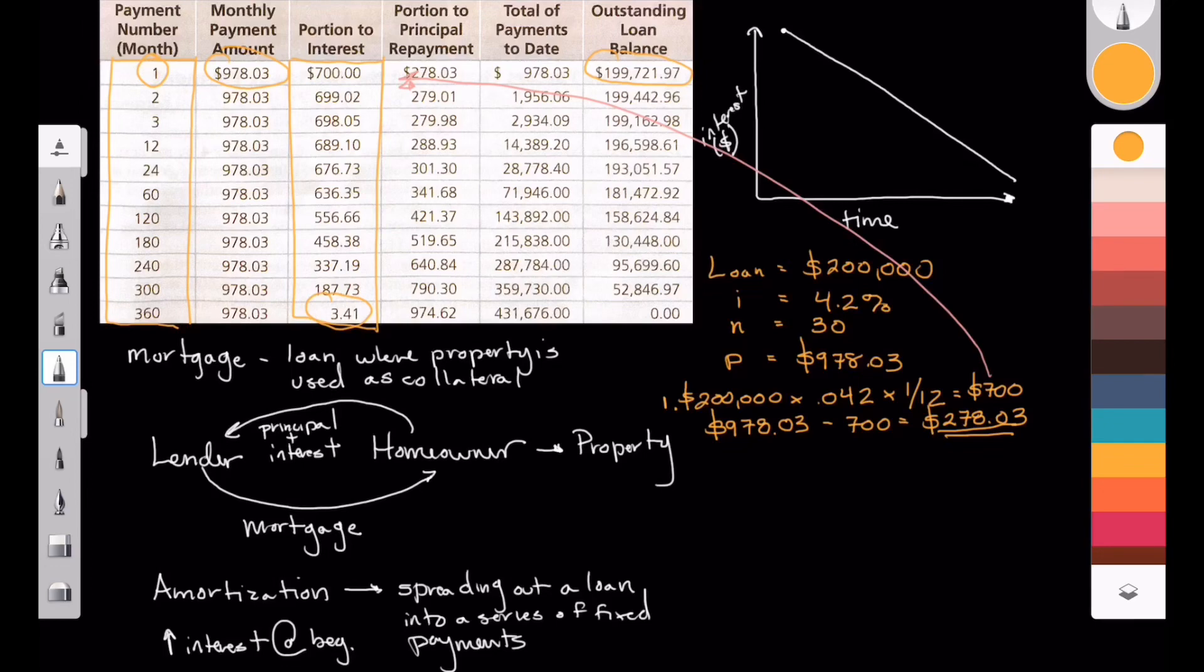And that's what we calculate the next one on. So if this was the second month, our loan is now $199,721.97. We would still multiply it by 4.2% and then 1 divided by 12. But this time, our interest is going to be different. Our interest is actually $699.02.